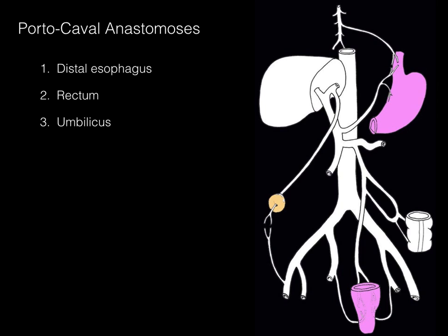In summary, portocaval anastomoses have three tissue areas where blood drains both portally and cavally. One: the distal esophagus drains to the azygous system (caval) and the left gastric vein (portal). Two: the rectum drains to the inferior mesenteric vein (portal) or the lower rectal veins (caval). Three: the peri-umbilical veins drain portally; the superficial epigastric veins drain cavally. A helpful mnemonic: gut, butt, and caput — the distal esophagus is part of the gut tube, the rectum is the butt, and caput medusae results from the peri-umbilical veins.